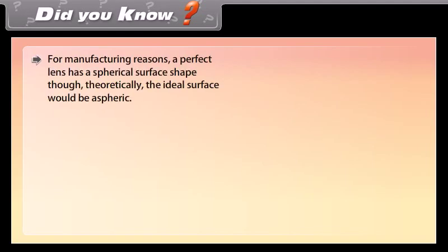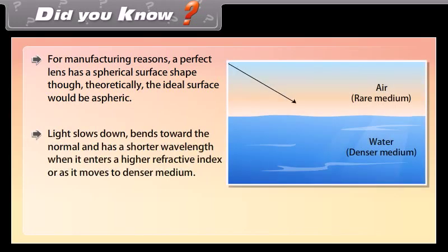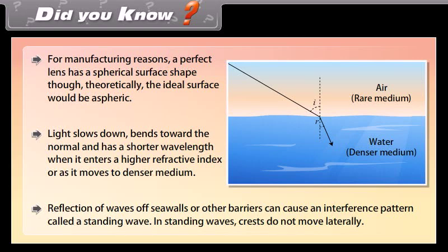For manufacturing reasons, a perfect lens has a spherical surface shape, though theoretically the ideal surface should be aspherical. Light slows down, bends towards the normal, and has a shorter wavelength when it enters a higher refractive index or denser medium. Reflection of waves off sea walls or other barriers can cause an interference pattern called a standing wave, in which crests do not move laterally.